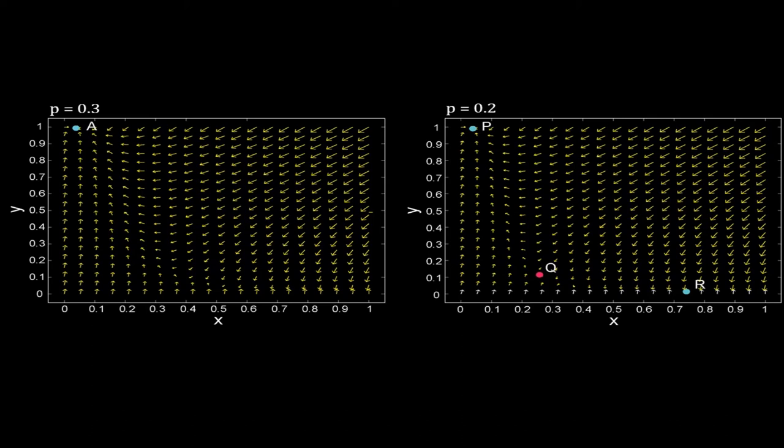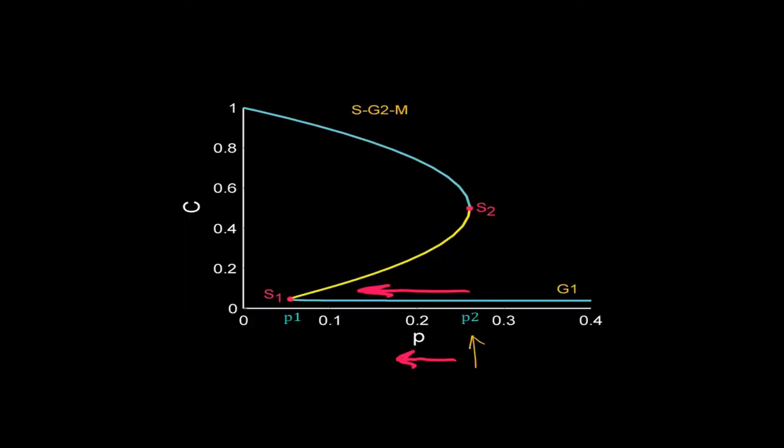There is no trajectory in the phase plane for the cell to go to R from A. So in the bistable zone, the cell stays at the lower stable steady state for any value of P. But once P drops below P1, a drastic event happens. The system has now only one stable steady state with high C. So the cell jumps to that steady state. C increases drastically. The cell leaves G1 phase and enters the S-G2-M.